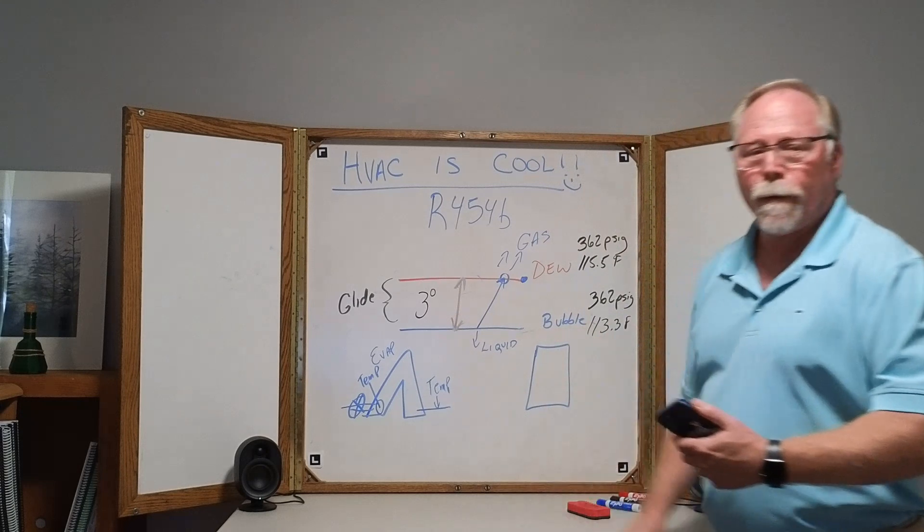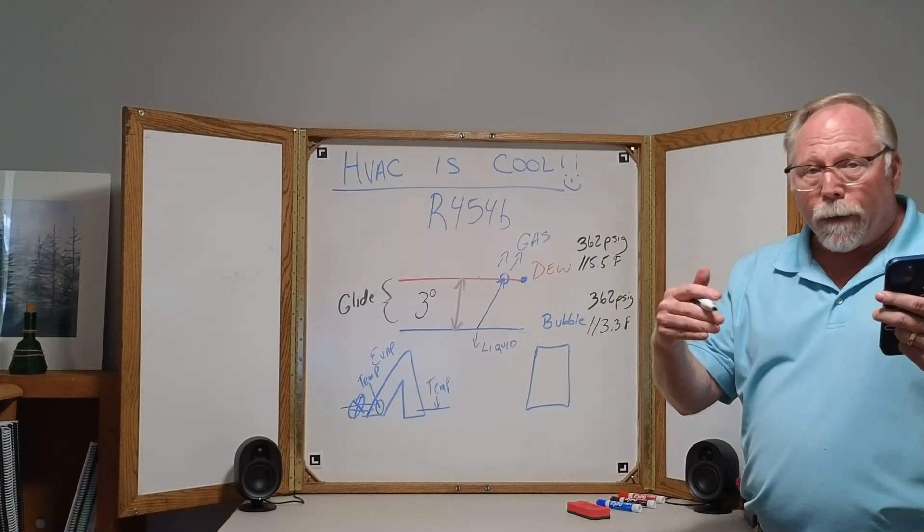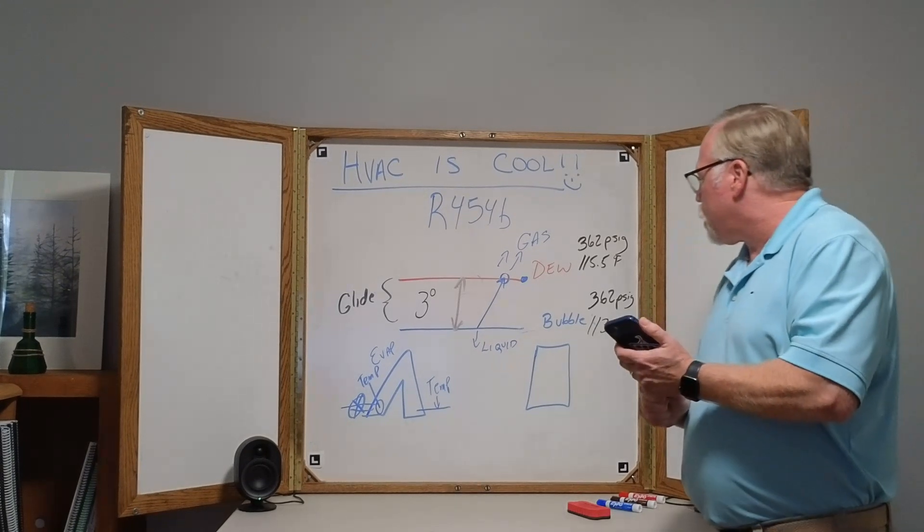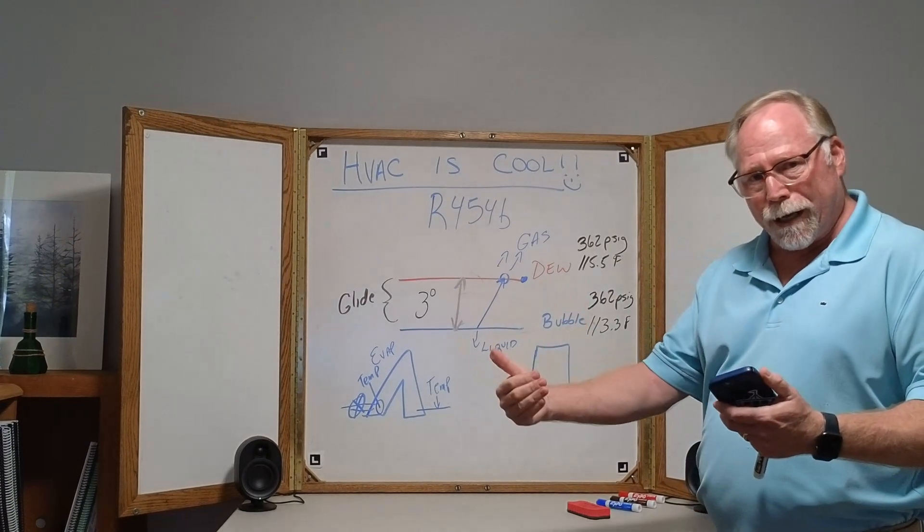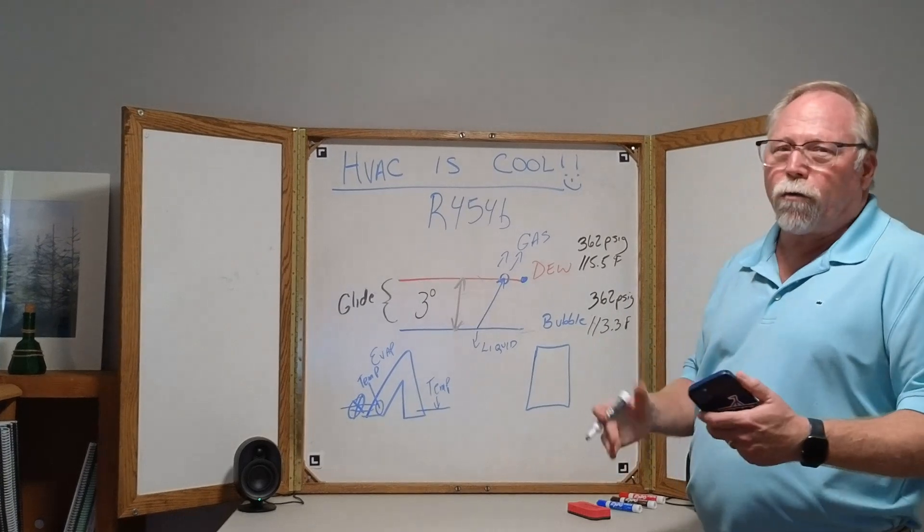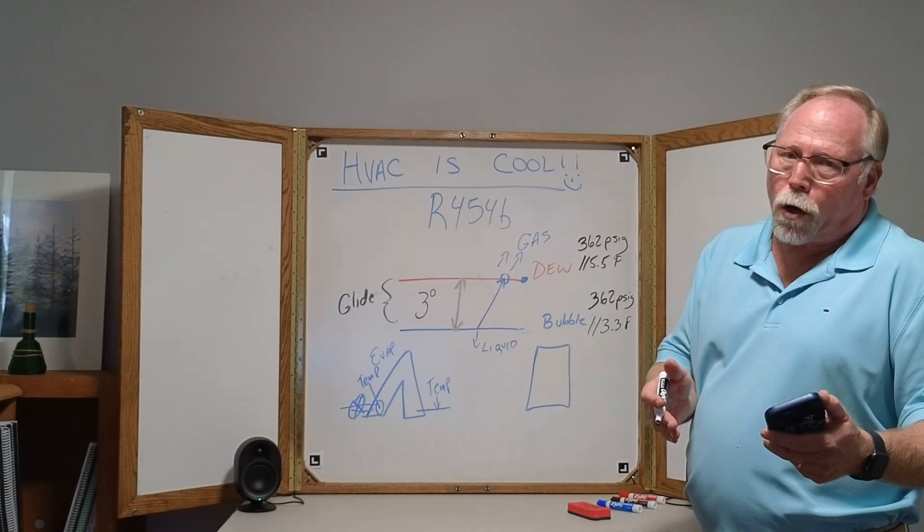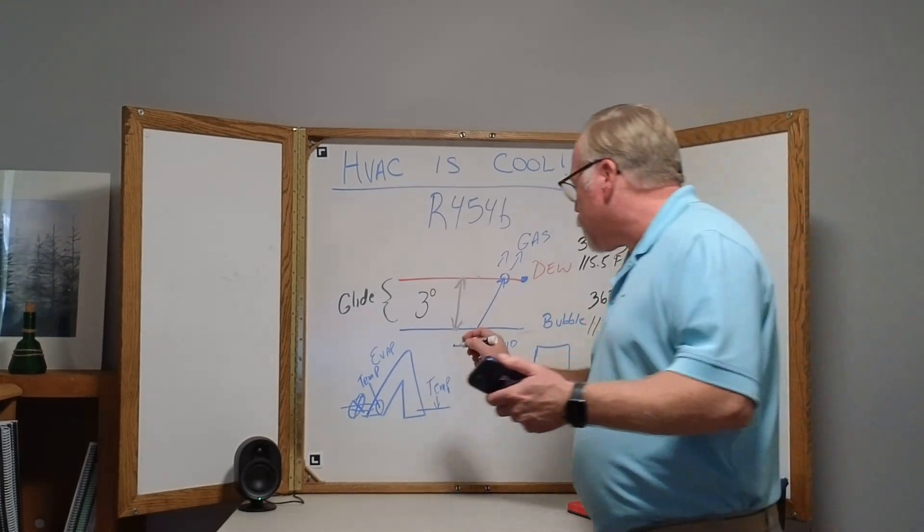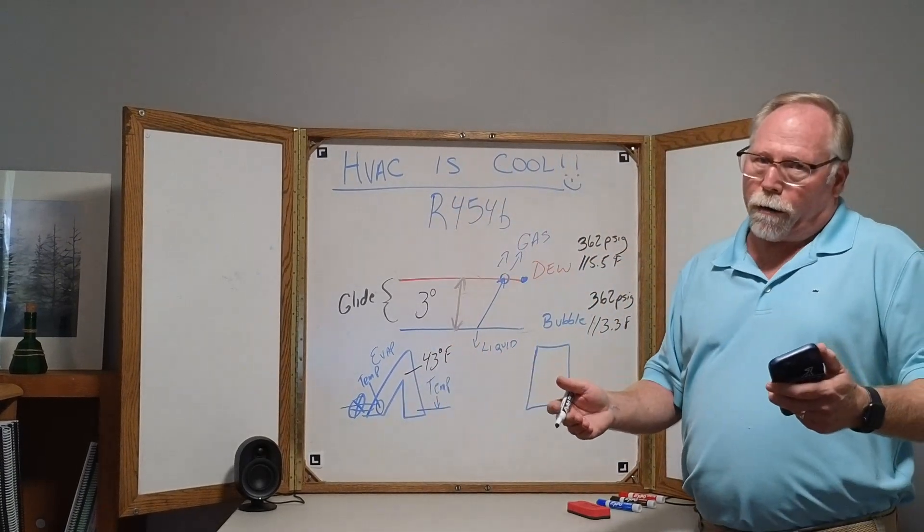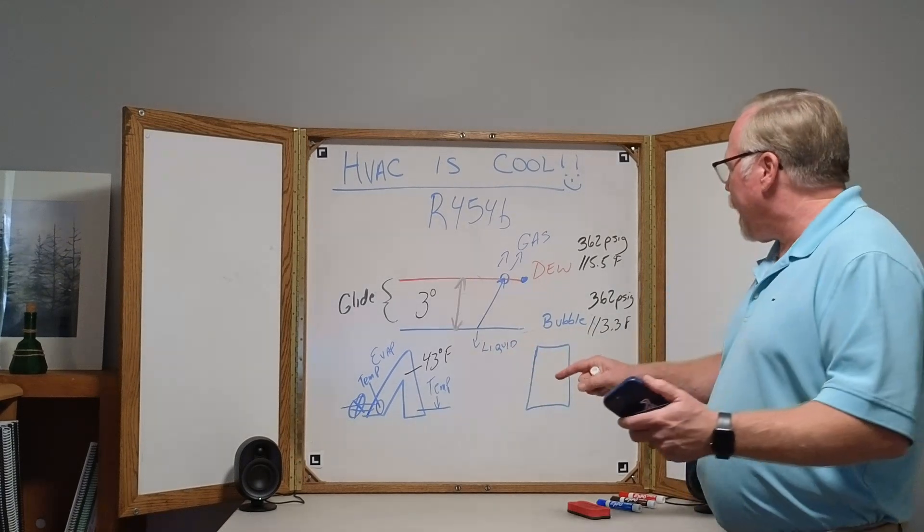So the difference between 115 or say 116 and 113 is three degrees. So there is a three degree glide in between the bubble and the dew. That's all that means. Because we have different refrigerants, they're boiling off and they're condensing at different temperatures. Now what does that mean for you out in the field? No worries at all. In the field we're looking for subcooling leaving the condenser and superheat leaving the evaporator. Over here on our evaporator, we're running roughly about a 45, 43 degree evaporator coil. On the average we're running around 43 to 45 degrees.